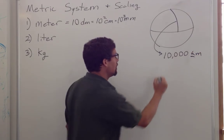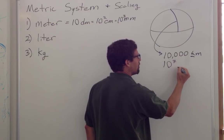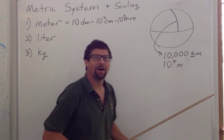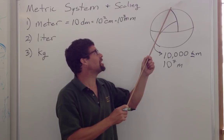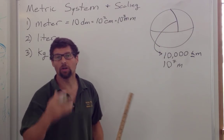Kilo is a thousand, so that's 10 million, or 10 to the seventh meters. A meter is one ten millionth the distance from the pole to the equator along the meridian.